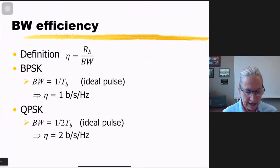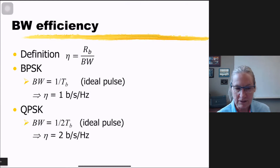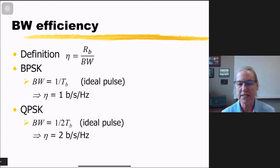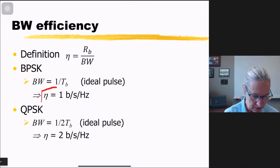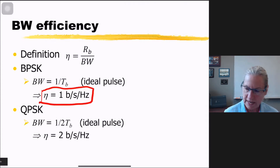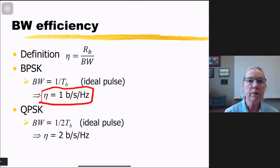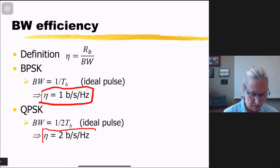So going to our definition of spectral efficiency: for BPSK it's 1 bit per second per hertz, and for QPSK it's twice that — 2 bits per second per hertz.